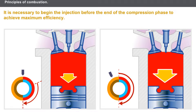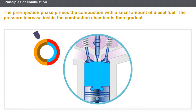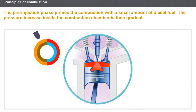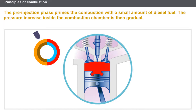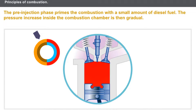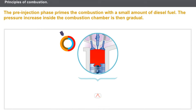It is therefore necessary to begin the injection before the end of the compression phase to achieve the greatest efficiency. Combustion of the air-diesel fuel mixture is explosive. The pressure increase inside the combustion chamber is sudden, causing vibrations and the rattling noise characteristic of diesel engines.